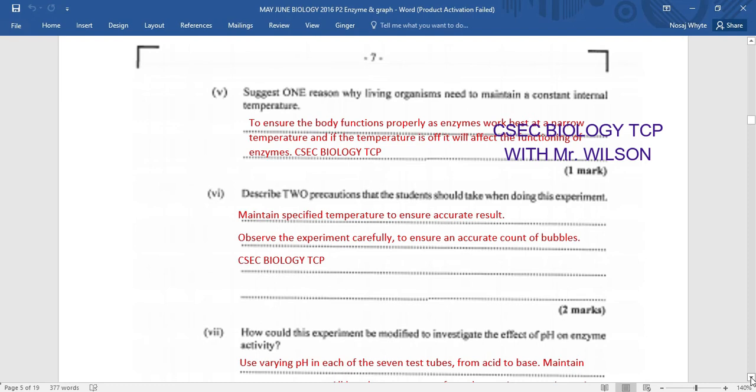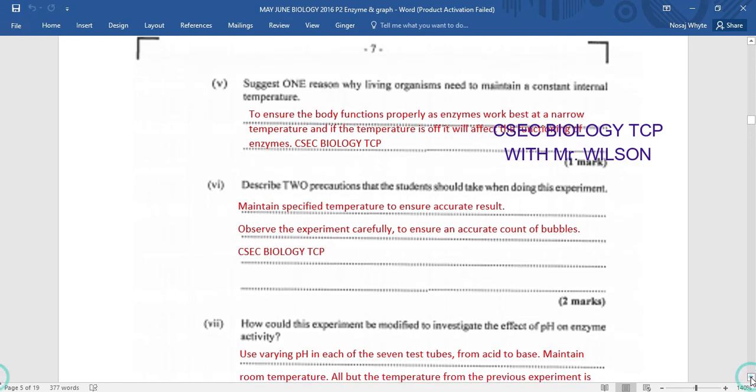Let us look at part VI. Describe two precautions that the students should take when doing the experiment. So you want to look at precaution here. And what I want to do is ensure an accurate result. You would have observed that all seven test tubes were pretty much at different temperatures. We want to ensure that that is maintained to ensure an accurate result. We want to observe the experiment carefully to ensure an accurate count of the bubbles. And you would have got two marks for that.